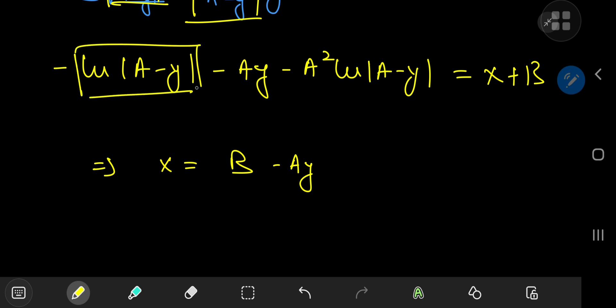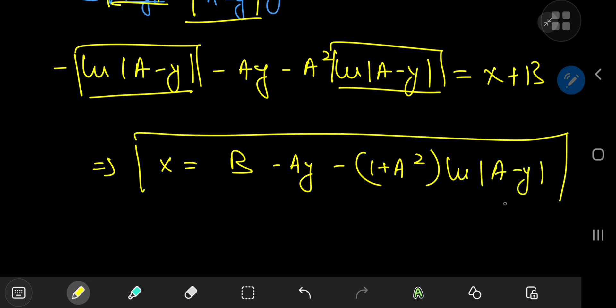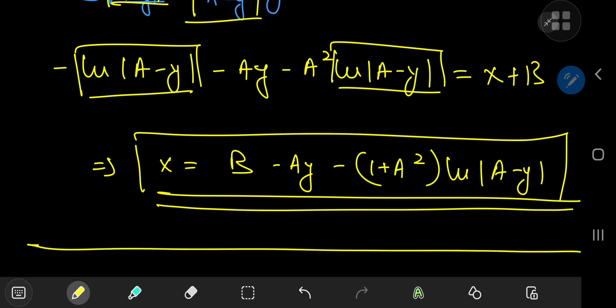And notice that I can factor out a log (a - y) term. And that gives me negative (1 + a²) times log (a - y), which is a pretty cool-looking solution to a pretty cool differential equation.